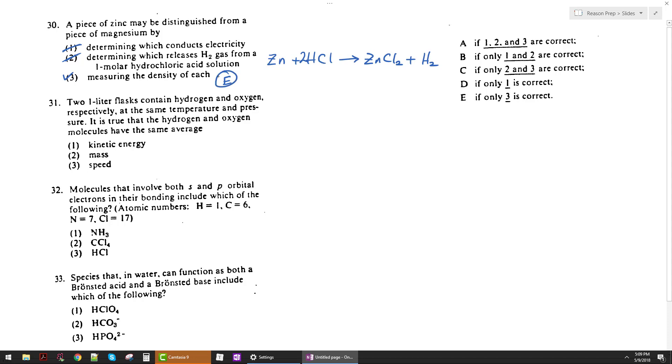Two 1-liter flasks contain hydrogen and oxygen at the same T and P. What do they have the same average? Well if they've got the same temperature, pressure, and volume, right, because they're two 1-liter flasks, based on PV equals NRT, we know that their moles are the same. Because PV equals NRT, that's got to be consistent if the PV and T is constant between both of them, or the same for both of these samples of gas, we know the N's got to be the same.